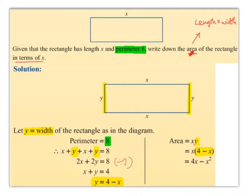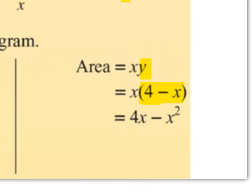Now we know that the area of a rectangle is length multiplied by width. We know that the length is x and the width is y, so the area is going to be x multiplied by y. And we just stated that y was 4 minus x, so we swap the y for (4 minus x) with brackets. Then we multiply out the brackets: x times 4 is 4x, x times minus x is minus x squared.